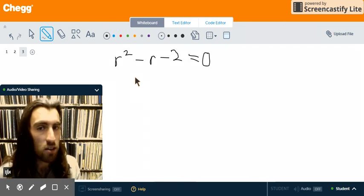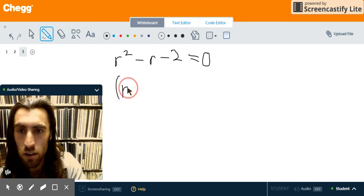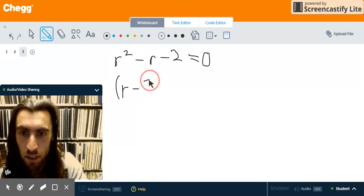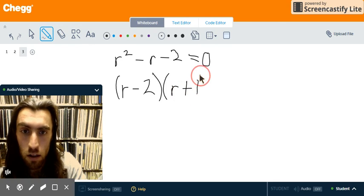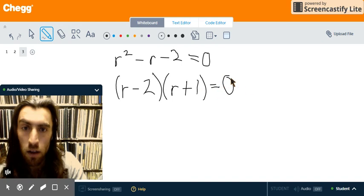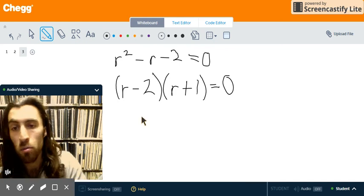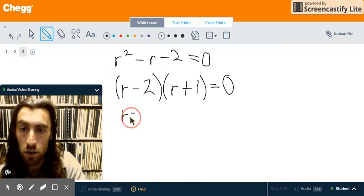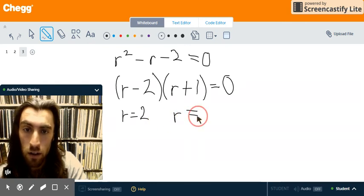We see that negative 2 and 1 multiply to negative 2 and add to negative 1. So, that's a pretty easy factorization. We have two solutions.